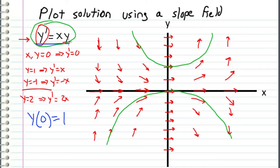If I have this differential equation, y prime equals xy, with the initial condition y of 0 equals 1, then I can plot the unique solution to that differential equation by starting at y of 0 equals 1 and then drawing my function tangent to all of the slope vectors, which would look like this.